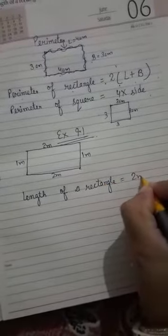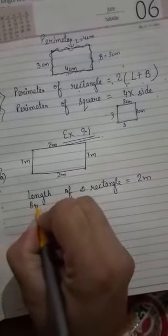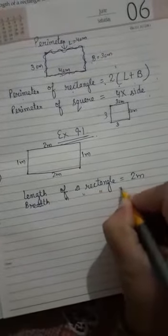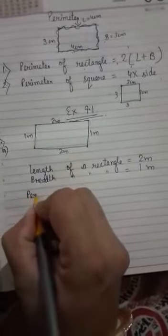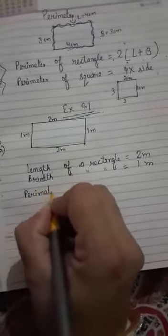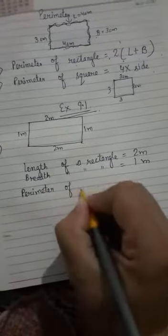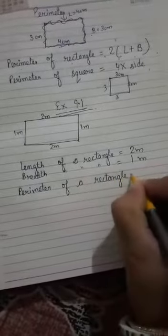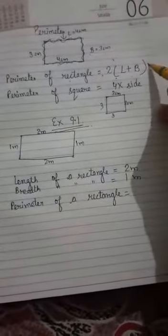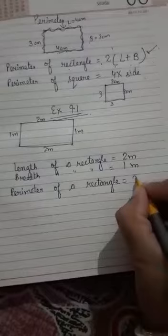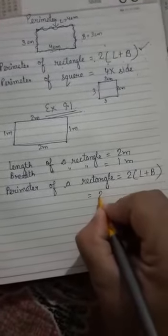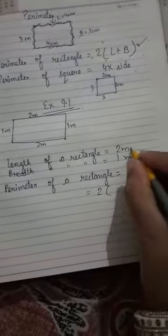Next, breadth of a rectangle is equal to 1 meter. Now find perimeter of a rectangle. The perimeter of rectangle formula is 2 into length plus breadth. Now, 2 times length 2 meters plus breadth given 1 meter.